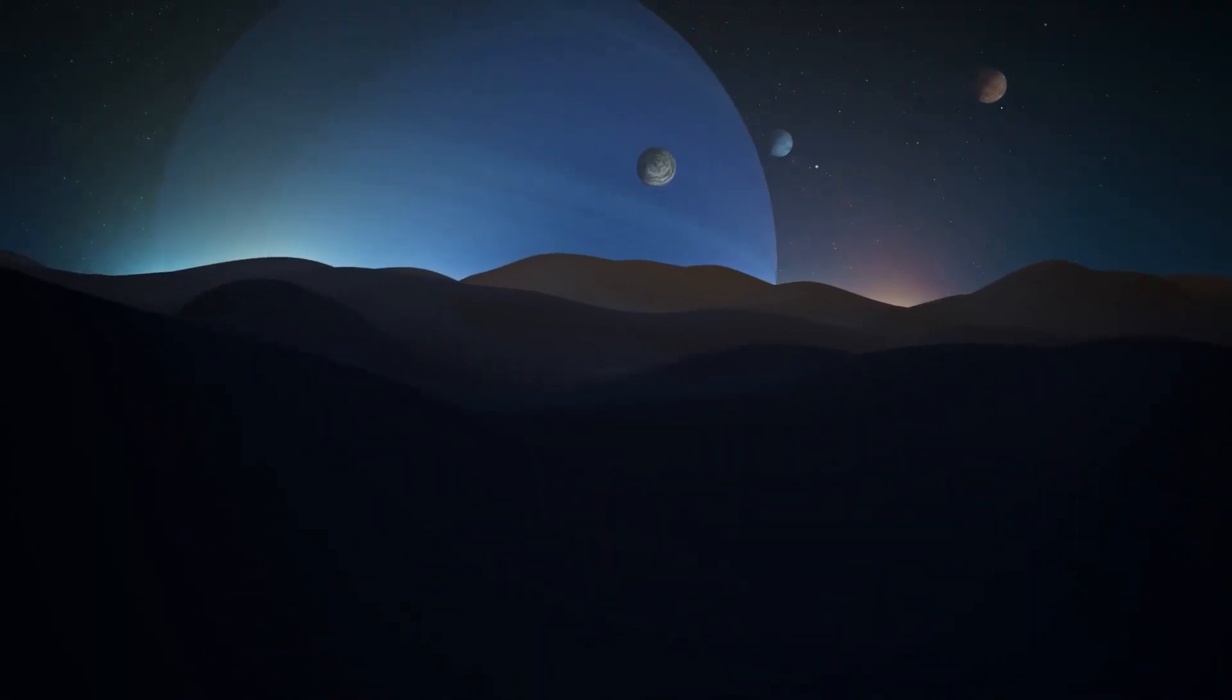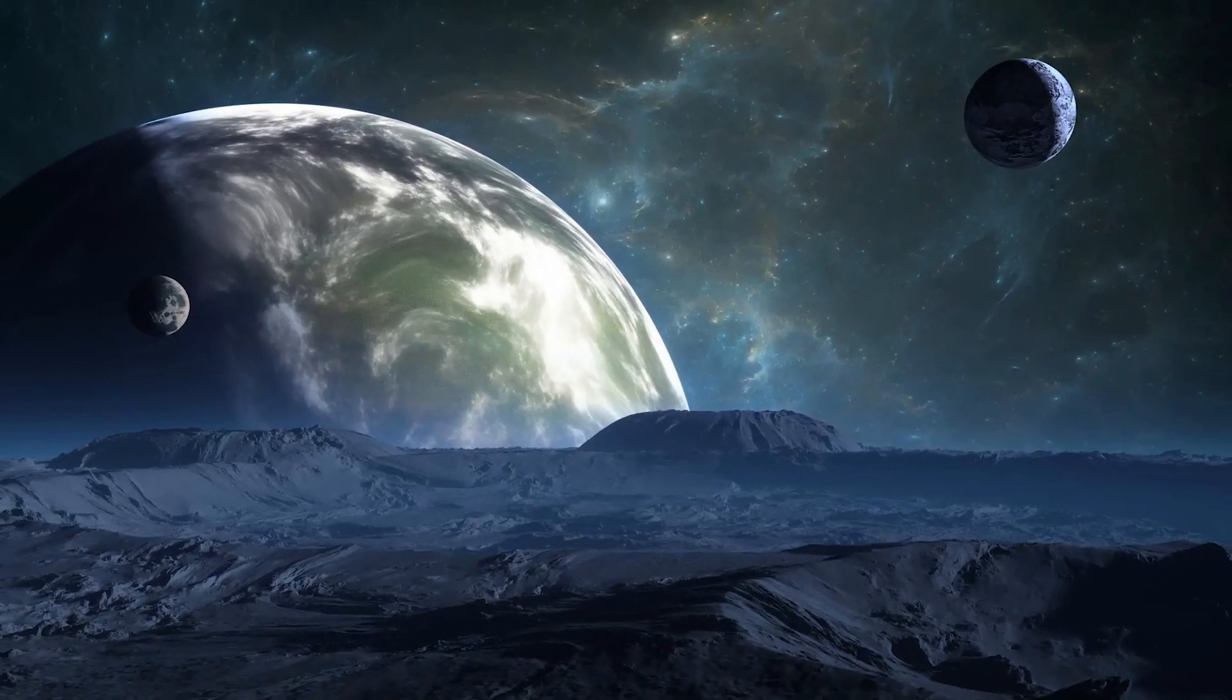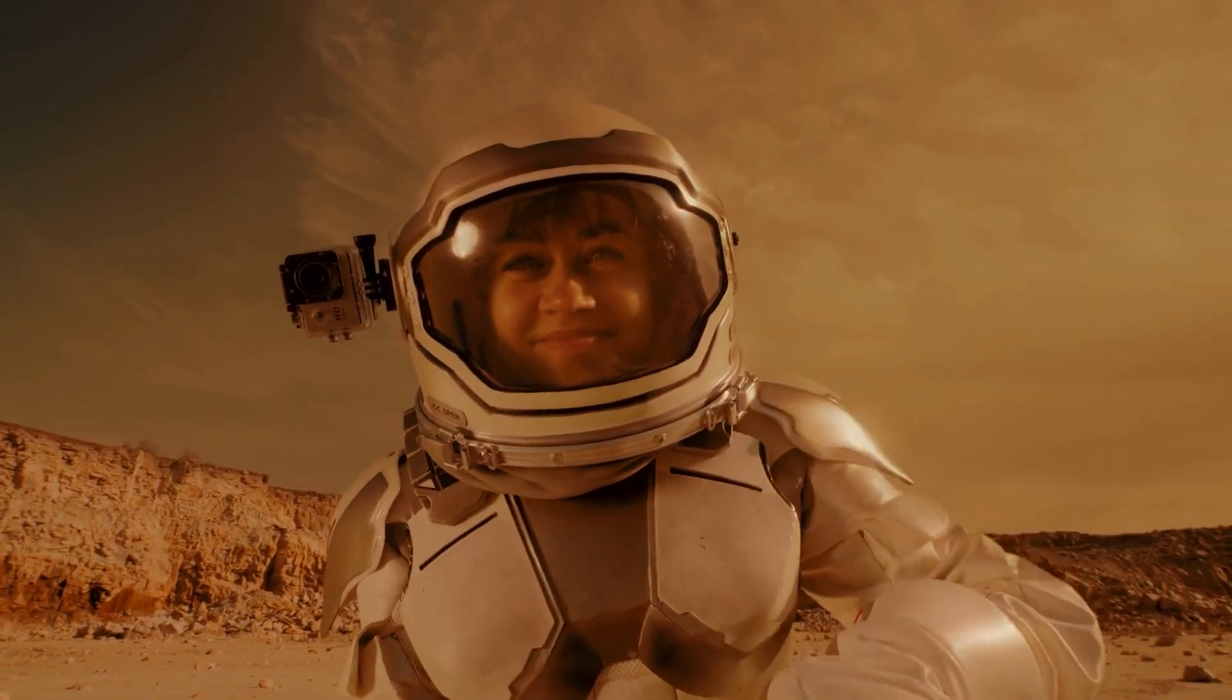If there is a rocky planet at the right distance from its star, there's a chance it could have liquid water on its surface, which is crucial for life as we know it.